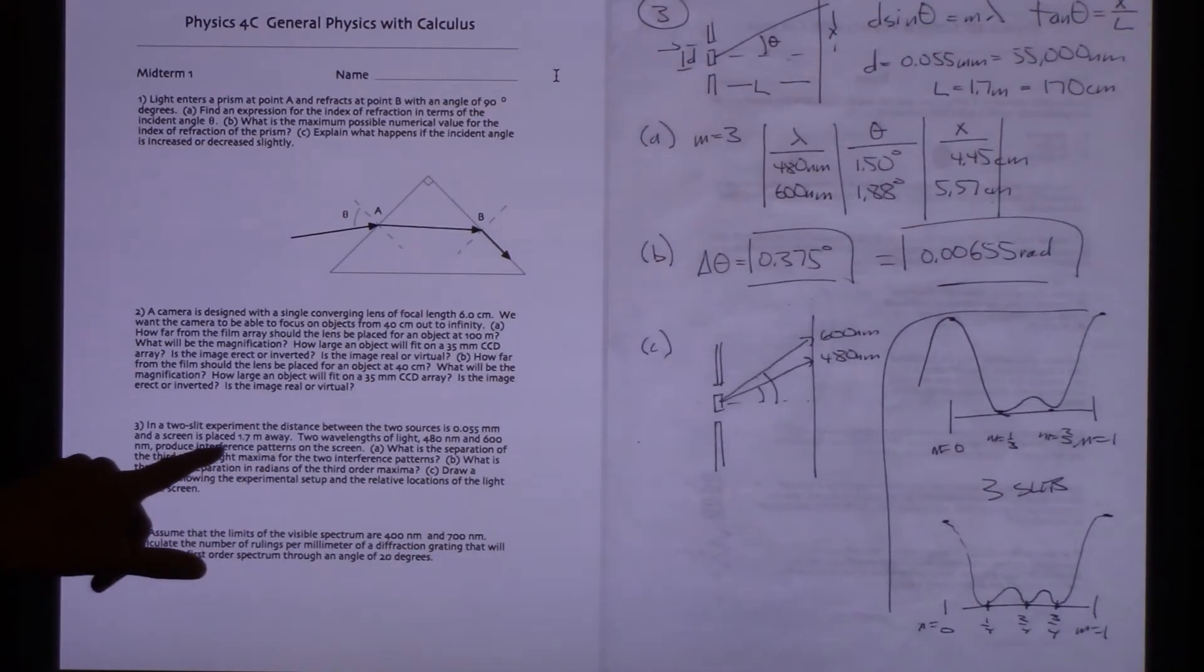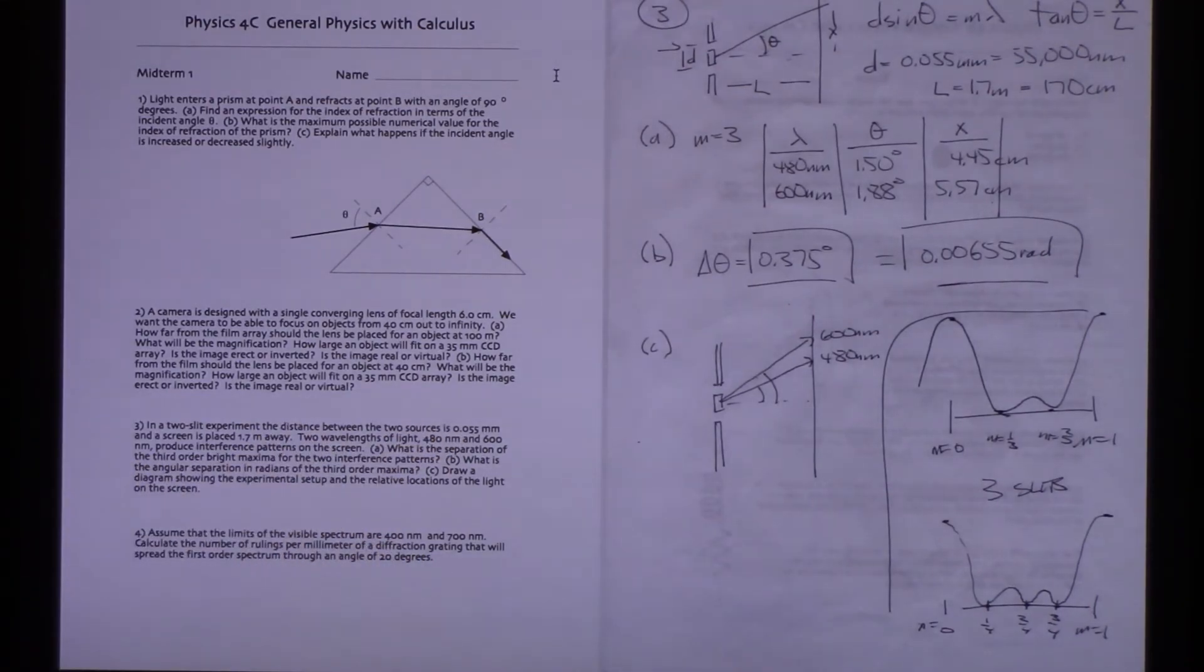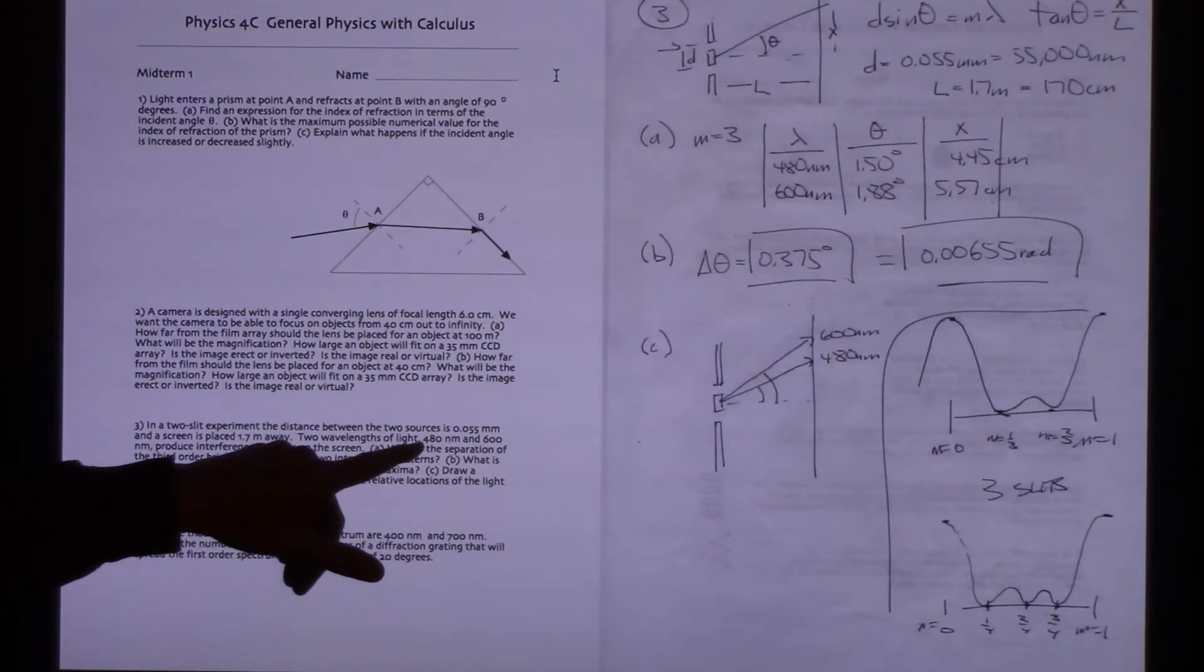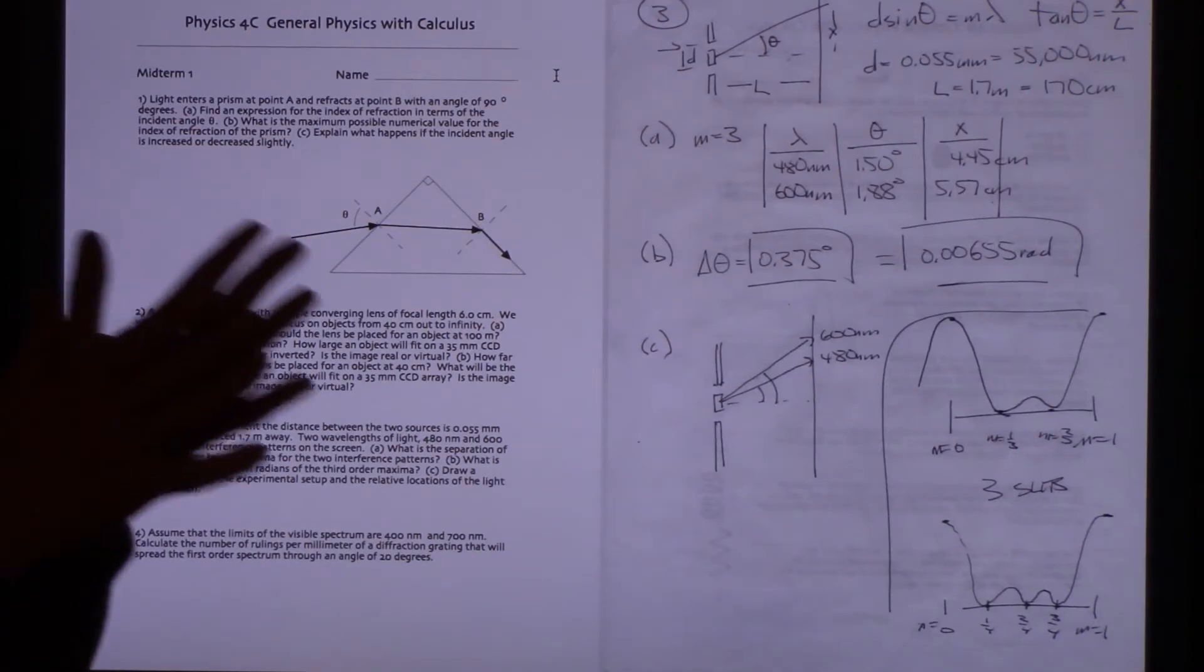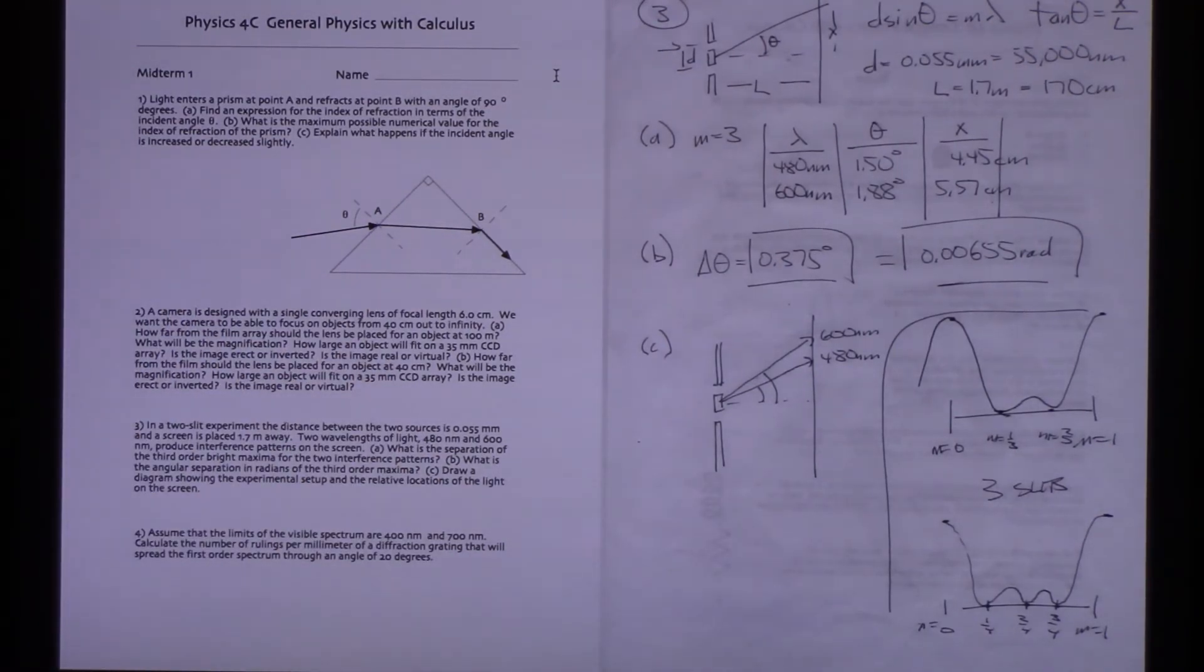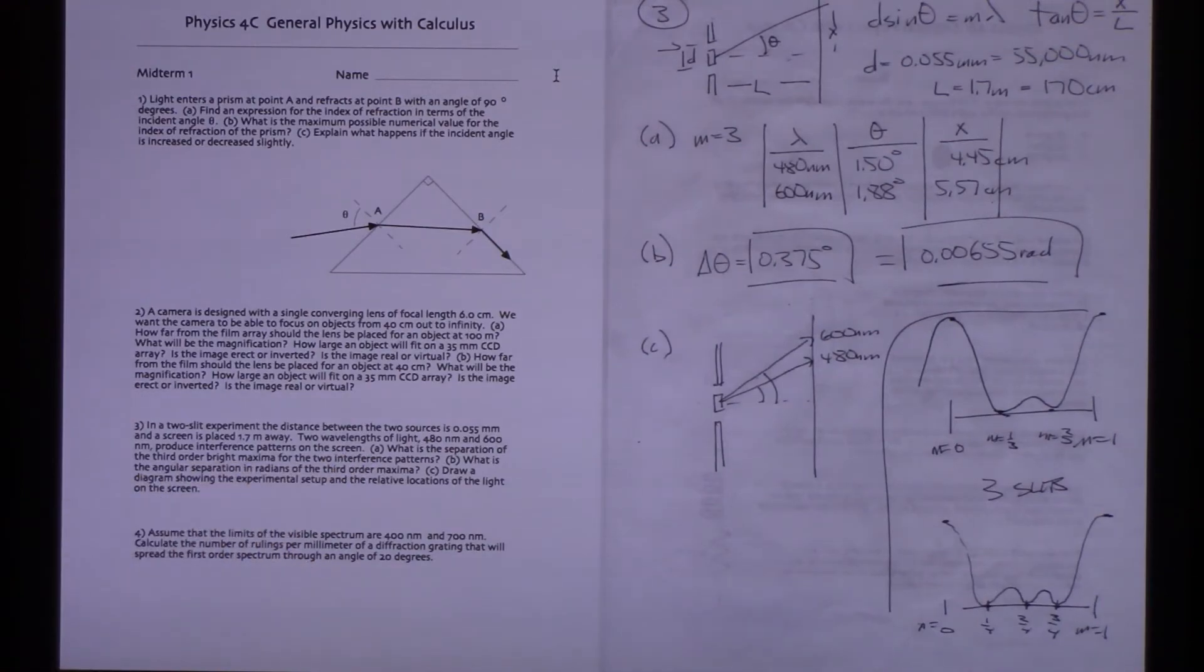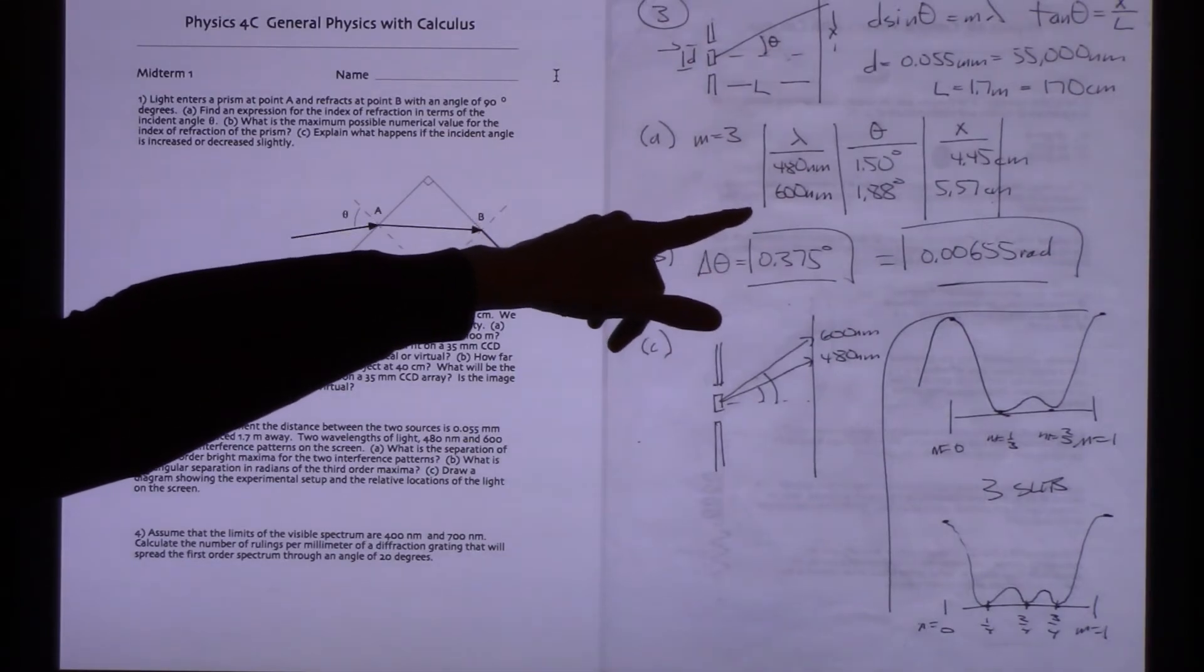For this, we've got two slits. A screen is 1.7 meters away. The distance between the slits is 0.055 millimeters. That's pretty small, less than a tenth of a millimeter. And we're going to work with two different wavelengths of light and look at their interference patterns. There's a 480 nanometer source and a 600 nanometer source. We can think of those both going through at the same time, or we can think of them as being done sequentially. What we're trying to find out is, what's the separation of the third order bright maximum for the two interference patterns? I'm going to use n equals 3. It's the third peak over.